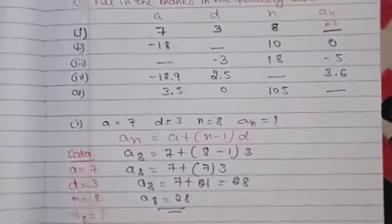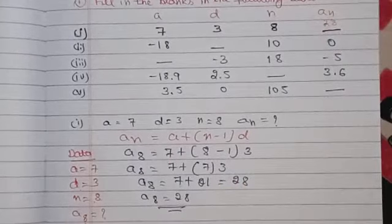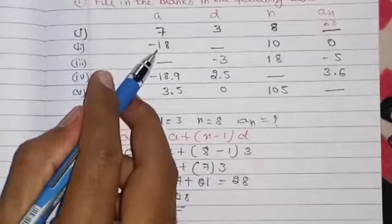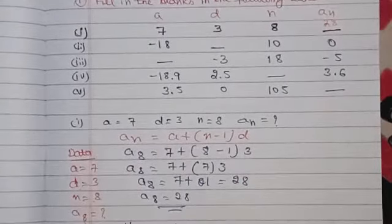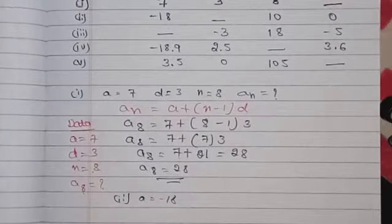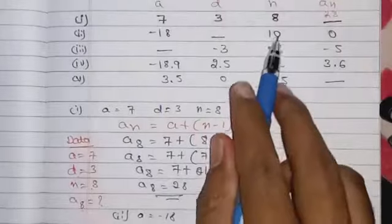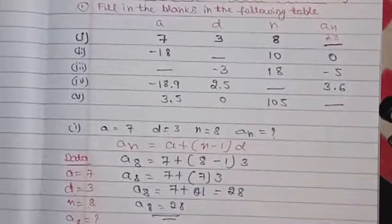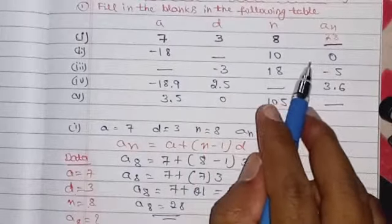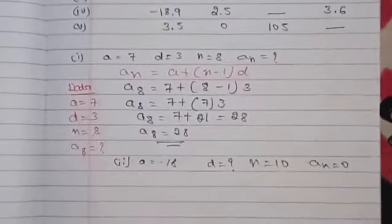Now the second question. The data given: A = −18. You need to find D, so D = ? And N = 10, and AN = A10 = 0.